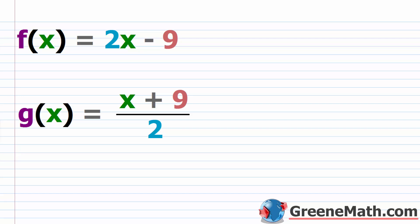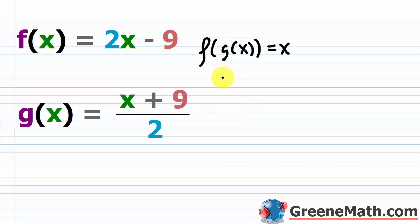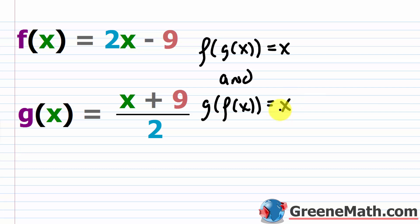So they give you two functions, one f, one g in most cases, and they say, determine if these two are inverses. The rule for this is very, very simple. If they're inverses, then f of g of x is equal to x — so this is f composed with g. And then also, g of f of x is equal to x as well. So both of these conditions have to be met. Don't just check one, you have to check both.